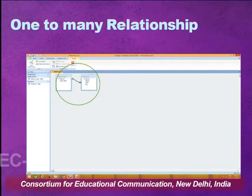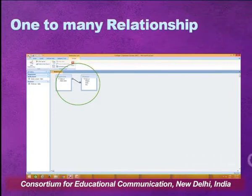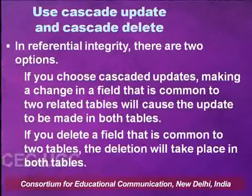When creating a relationship between a primary key and a foreign key, the relationship type must be one-to-many. If it shows as one-to-one, it means you are relating the primary keys of two tables, where each record comes only once. That is not what we need. Making a change in a field common to two related tables will cause the update in both tables, and deleting a common field will cause deletion in both tables — you need to work on the two tables simultaneously because you have created an association between them.